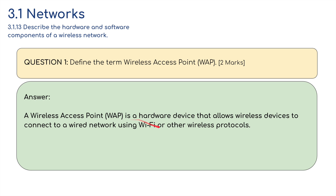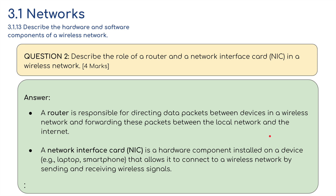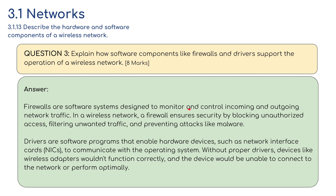A wireless access point is a hardware device that allows wireless devices to connect to a wired network using Wi-Fi or other wireless protocols. A router is responsible for directing data packets between devices in a wireless network and forwarding them between the local network and the internet. The NIC is a hardware component installed on a device — e.g. a laptop or smartphone — that allows it to connect to a wireless network by sending and receiving wireless signals. Firewalls are software systems designed to monitor and control incoming and outgoing network traffic, ensuring security by blocking unauthorized access, filtering unwanted traffic, and preventing attacks like malware. Drivers are software programs that enable hardware devices, such as a NIC, to communicate with the operating system — without proper drivers, wireless adapters wouldn't function correctly and a device would be unable to connect to the network.